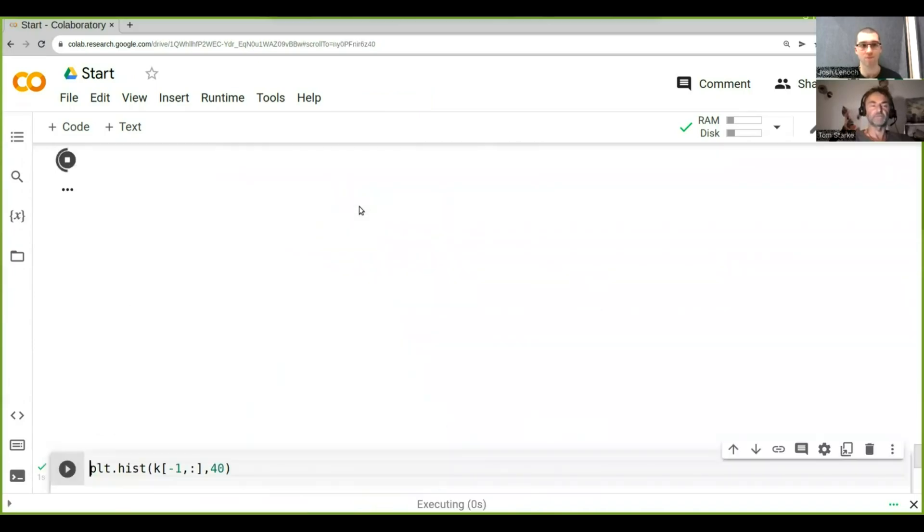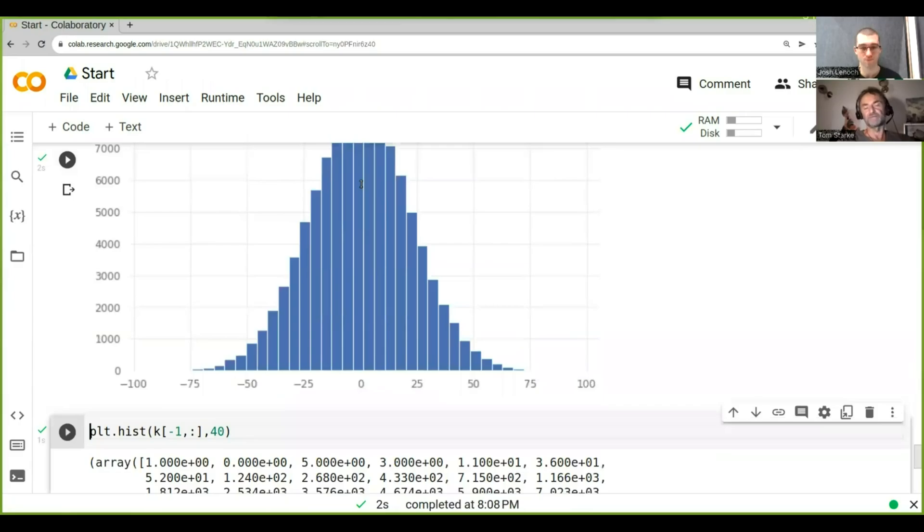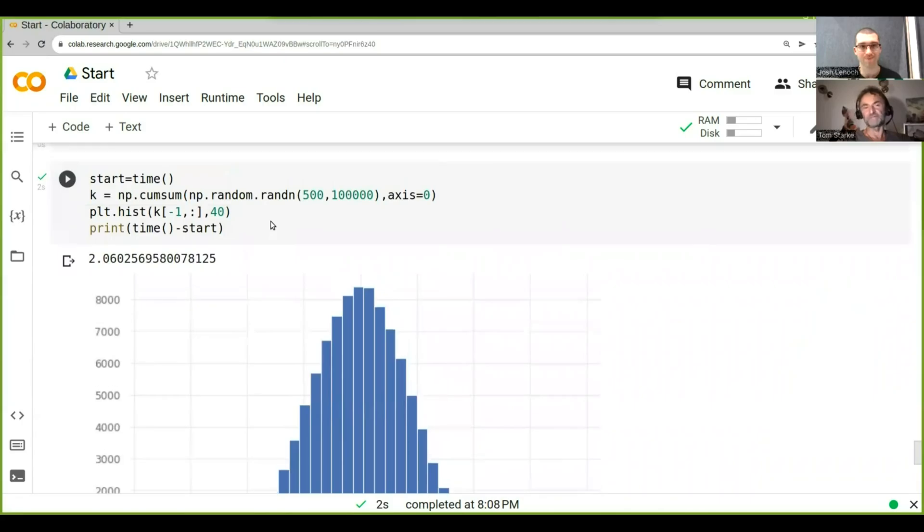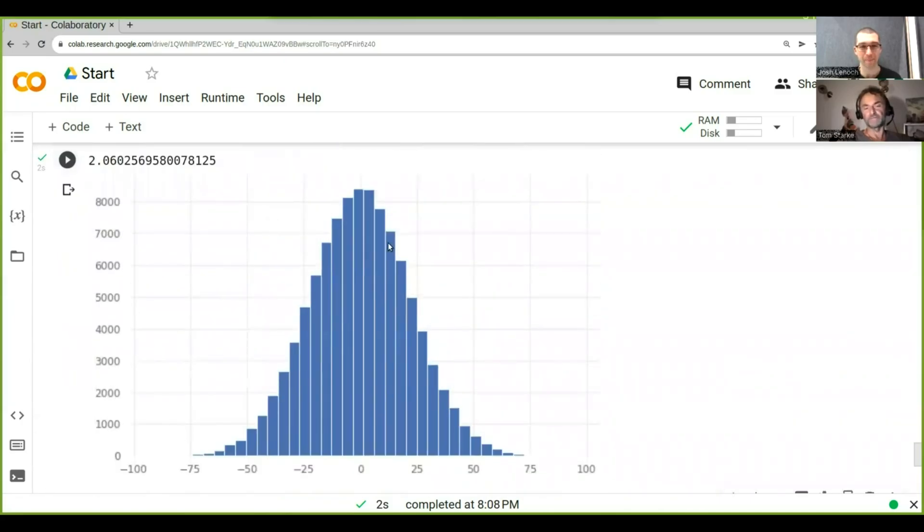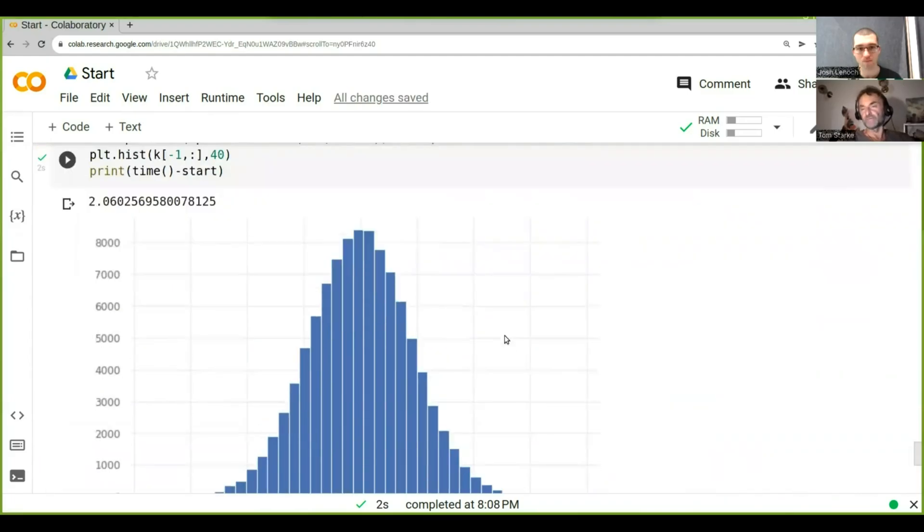So let's just run this again, should run a little bit longer, because we've got 500 and 100,000 now. But it ran very quickly, two seconds, for 500 timesteps and 100,000 trajectories. And you can see, it's a very nice distribution again. But as you can see now, instead of what we had before 30, it actually smears out all the way to about 70-75.